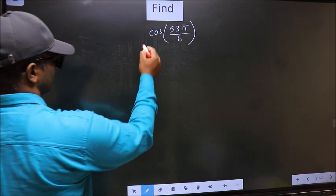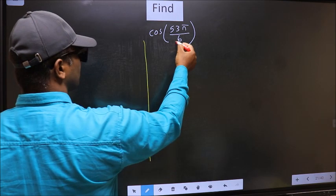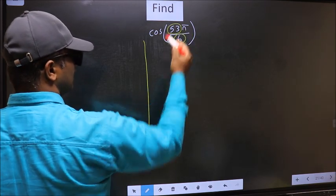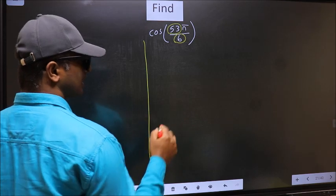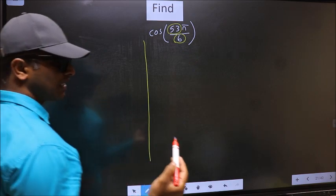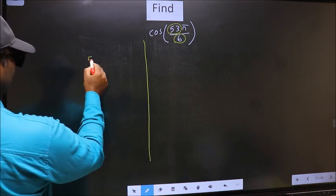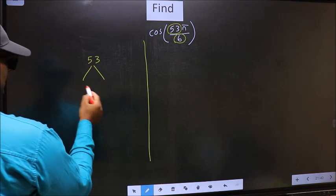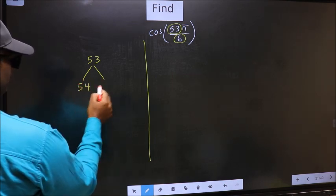In the denominator, we have 6. In the numerator, 53. Now, you should check 53 is close to which multiple of 6. Here you write multiples of 6, that is 54 and 60.